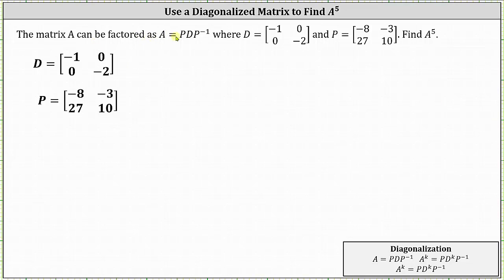Matrix A can be factored as A equals P times D times P inverse. P times D times P inverse is the diagonalization of matrix A. Notice we're given matrix D and matrix P, and we're asked to find matrix A raised to the fifth power.